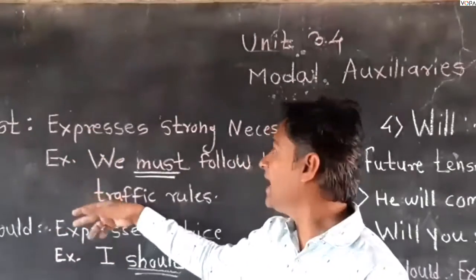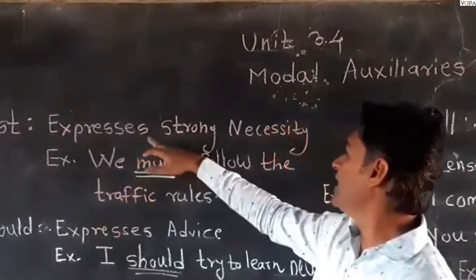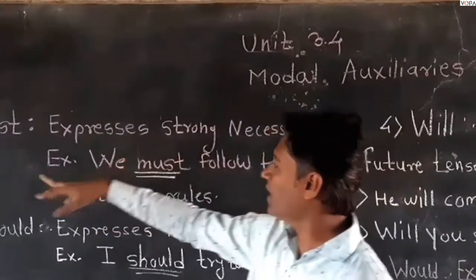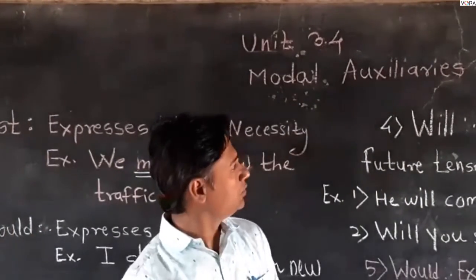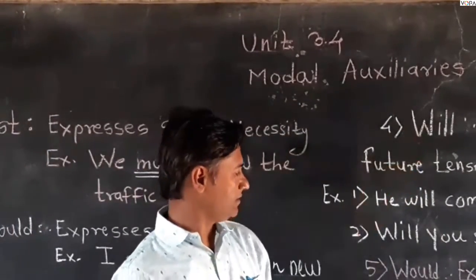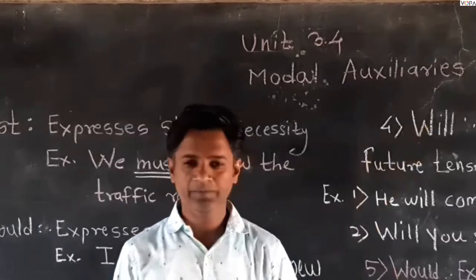Today we are going to learn the remaining five modal verbs, their examples, and the feelings which they express. Those are must, should, ought to, will, and would.